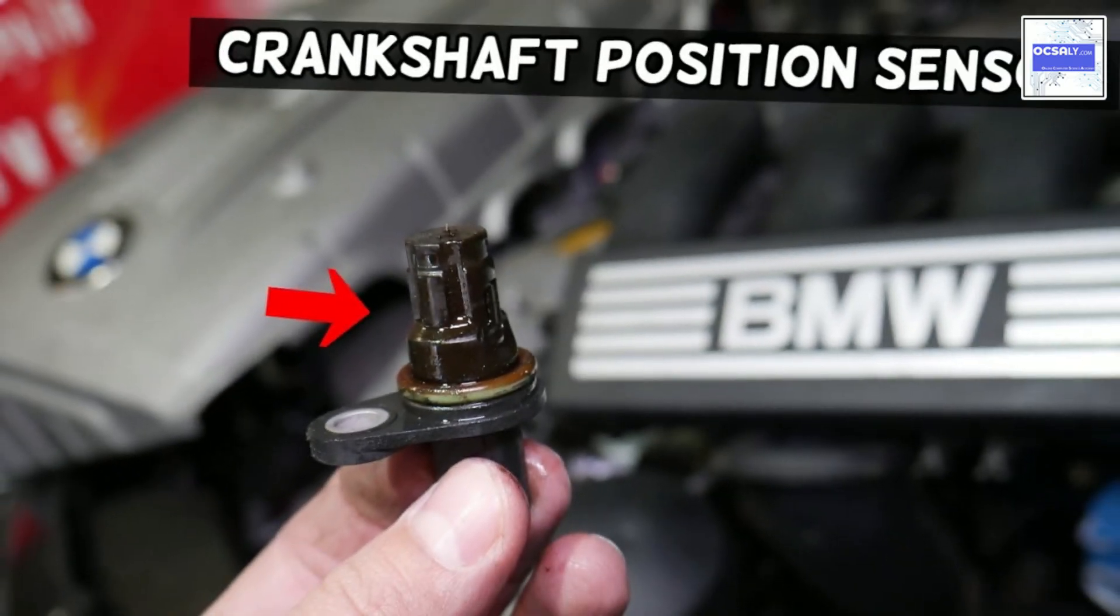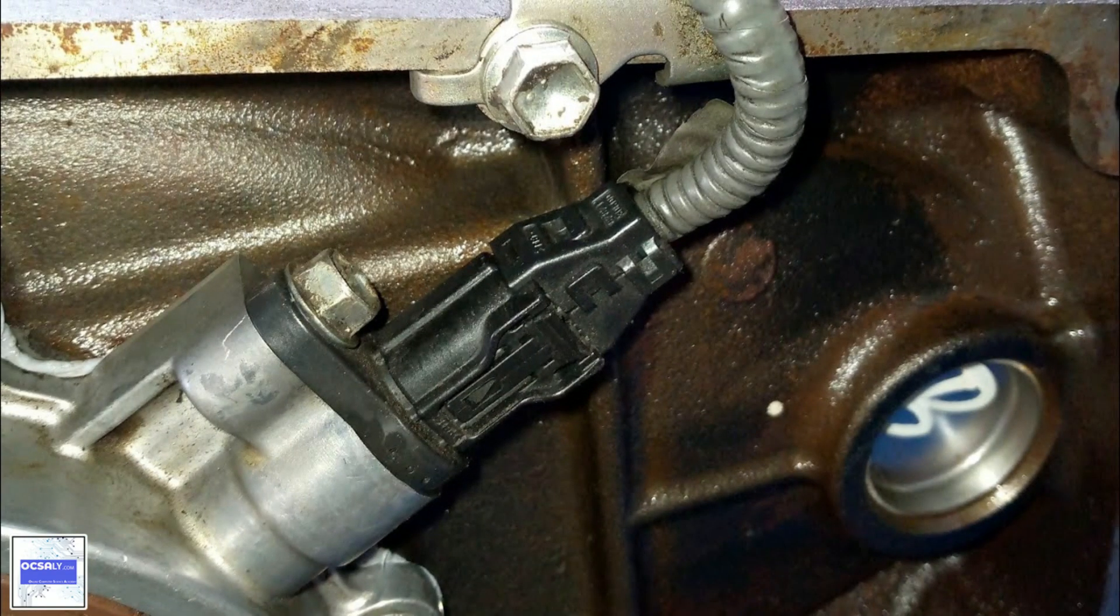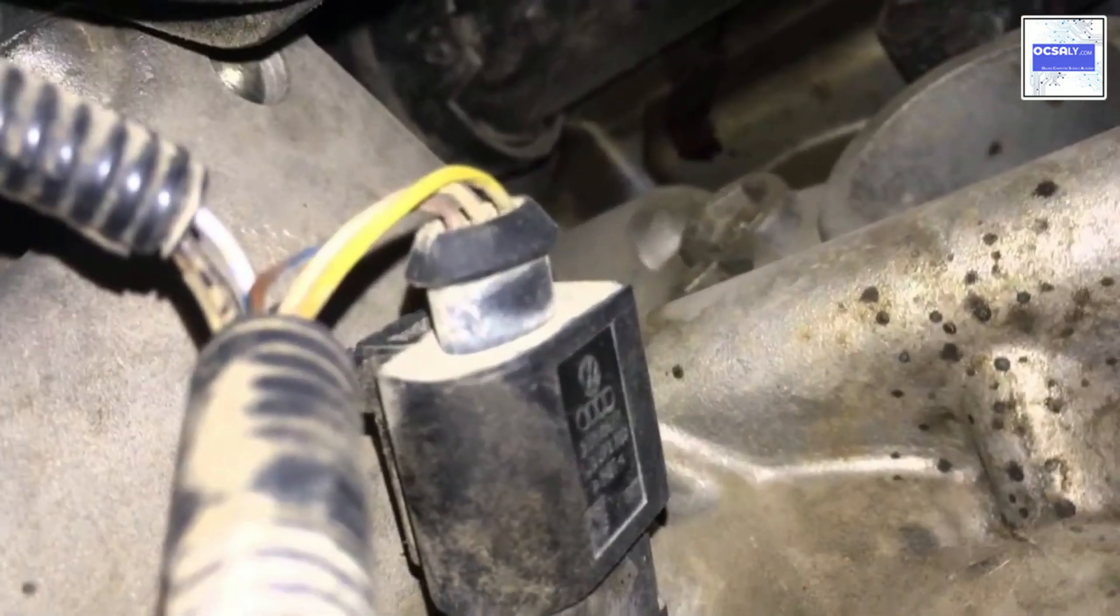Sometimes you might see the RPM gauge behaving erratically. In some cases, a failing sensor can cause long crank time before the engine starts. If the sensor is bad, the engine will crank but won't start.